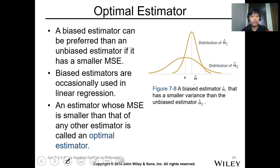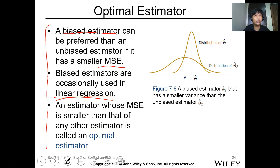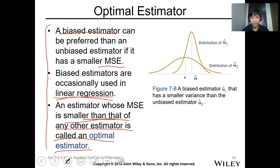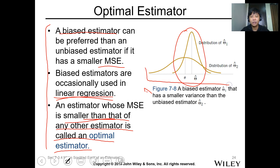For an optimal estimator, a biased estimator can be preferred over an unbiased estimator if it has a smaller MSE. Even if the estimator is biased, if its MSE is low, you can utilize that. Biased estimators are occasionally used in linear regression. An estimator whose MSE is smaller than that of any other estimator is called the optimal estimator. As shown in figure 7-8, a biased estimator theta-hat can have a smaller variance compared to unbiased estimators.